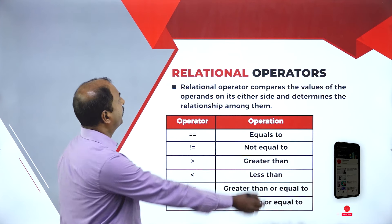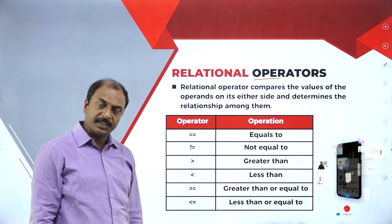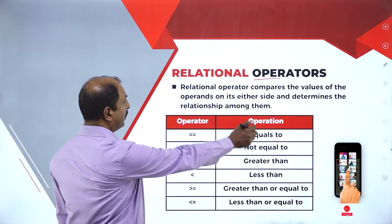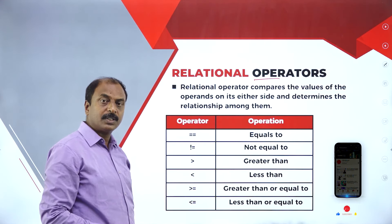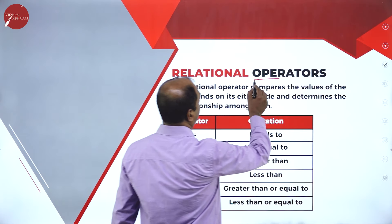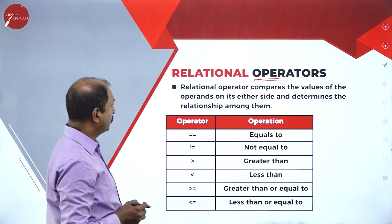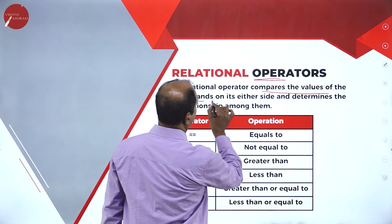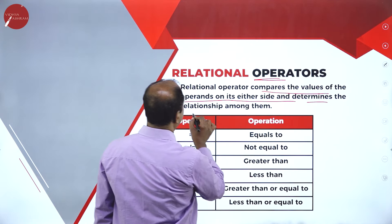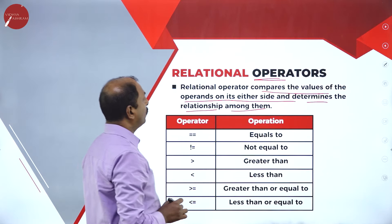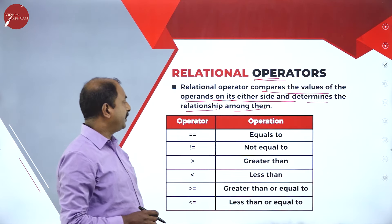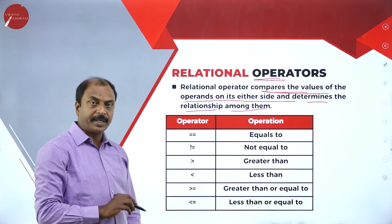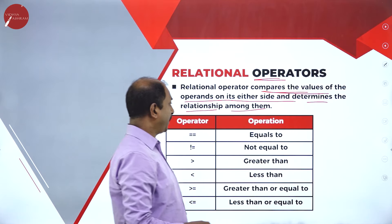Now let us continue with relational operators. In the previous session, we have discussed about the arithmetic operator. Now in this session, we will talk about other different types of operators of Python language. So what are relational operators? Relational operators compare the values of one operand on either side and determines the relationship among them. These operators are going to compare the values of the two operands on either side of the operator.